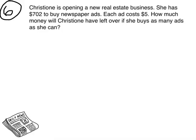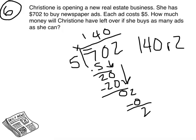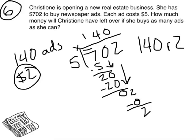Let's do one more. Christiane is opening a new real estate business. She has $702 to buy newspaper ads. Each ad costs $5. How much money will Christiane have left over if she buys as many ads as she can? So, how many groups of $5 are in $702? Go ahead and solve that division problem now. The answer is 140, remainder two — so 140 ads with $2 left over. How much money will Christiane have left over? I would use the remainder of two as my answer.